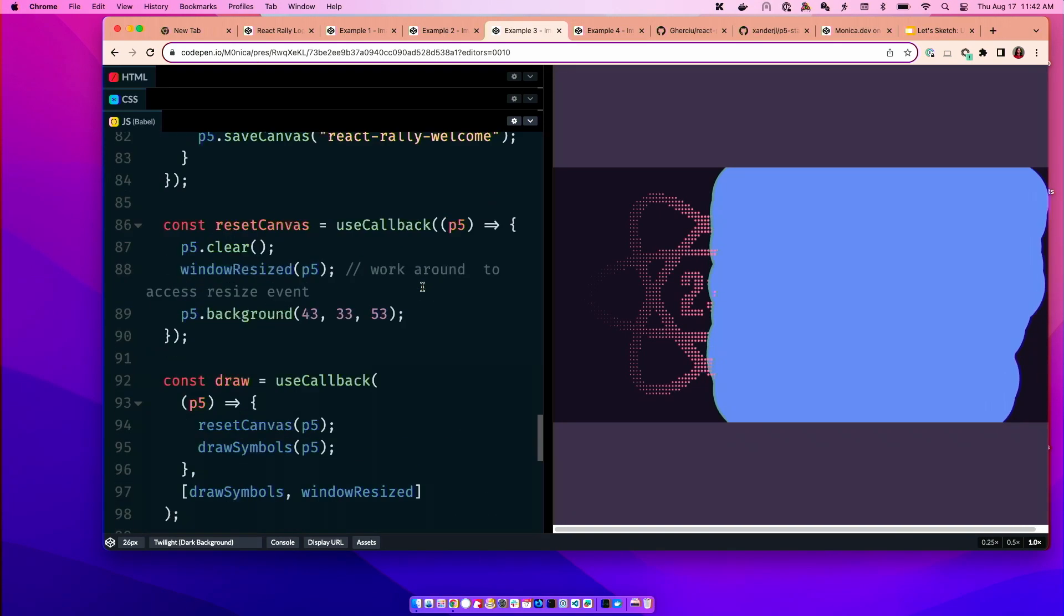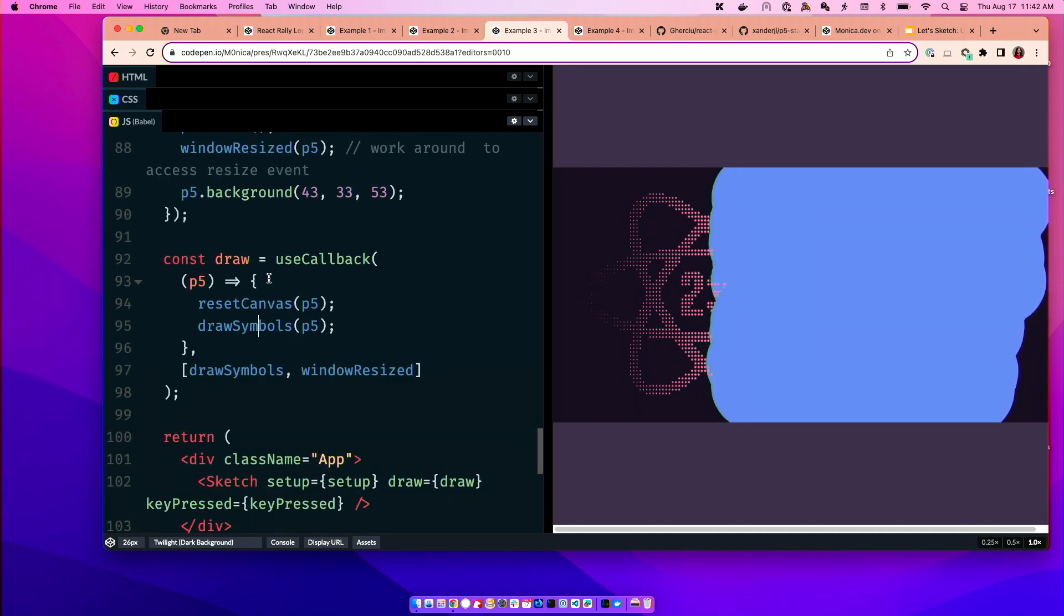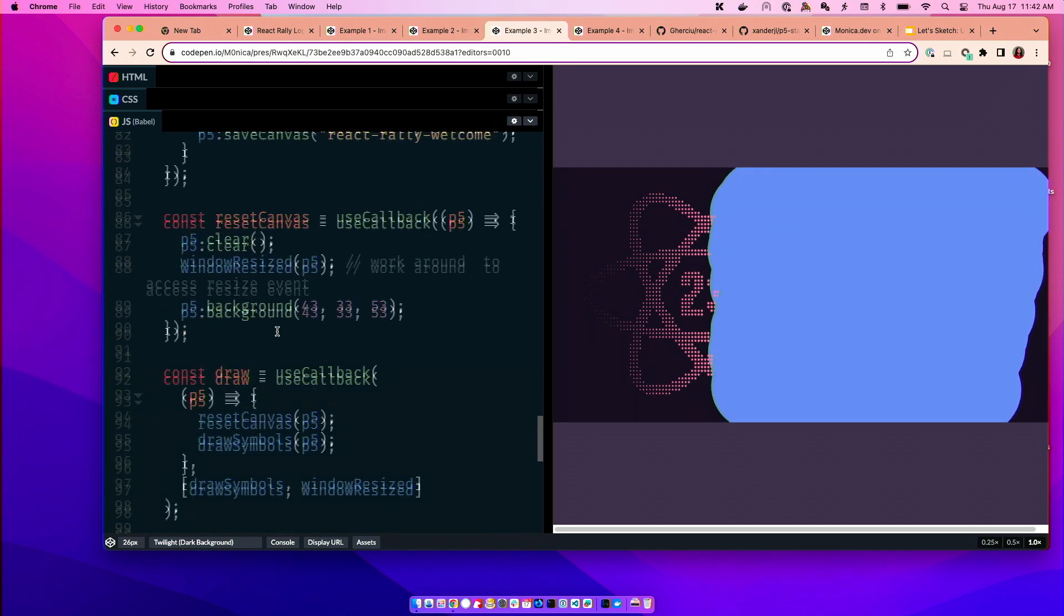And then in terms of that draw symbols function that we've been working on, this is all happening inside of the draw function. And so I just split it up so that it would be a little bit separate from the rest of the canvas, from the rest of the functionality, but it could all go directly inside the draw loop.